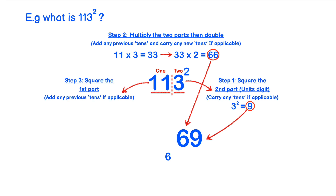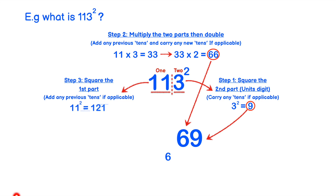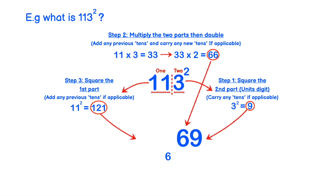Using the same technique as in how to square any two-digit number, 11 squared becomes 121. Since we have a 6 carried from before, we add the 6 which makes 127. So the answer is 12769.